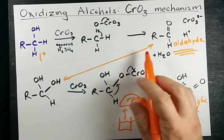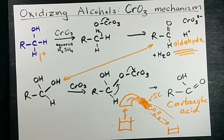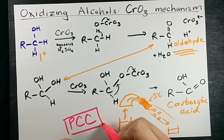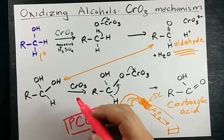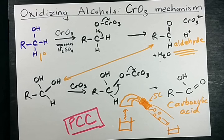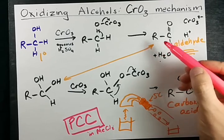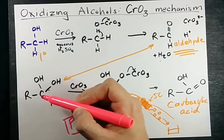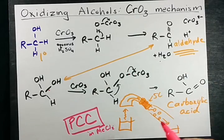You can also oxidize alcohols with something called PCC. If you use PCC, we have ways of stopping it at the aldehyde and preventing it from going on to react to the carboxylic acid. It's actually PCC in methylene chloride, which prevents us from having water around, which prevents the aldehyde from becoming the diol, which is much more easily oxidized. So if we can prevent the diol from forming, it probably won't get oxidized to the carboxylic acid.